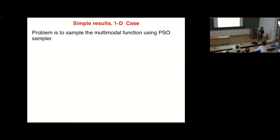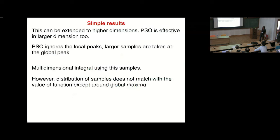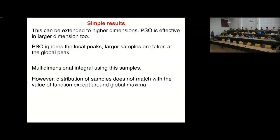So what we are trying to say is that we can have an algorithm which can sample effectively — although it ignores local peaks. Particle Swarm Optimization seems to be a good choice for combining detection and likelihood function evaluation, accurately estimating parameters close to the true value. I will stop here. Thank you.